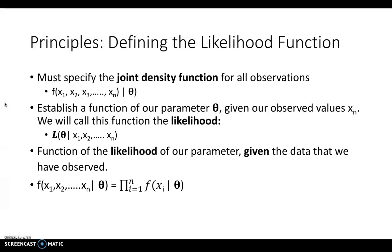The next step is to define the likelihood function. To do this, we need to specify the probability density function for all of our observations — our randomly sampled observations given our parameter theta. To establish the likelihood function, we establish a function of our parameter theta given our observed values x of n. We denote this function with an L and call it the likelihood: the likelihood of our parameter given the data observed. Since each observation is independent, we can also write the function as the product of each of the univariate probability density functions.